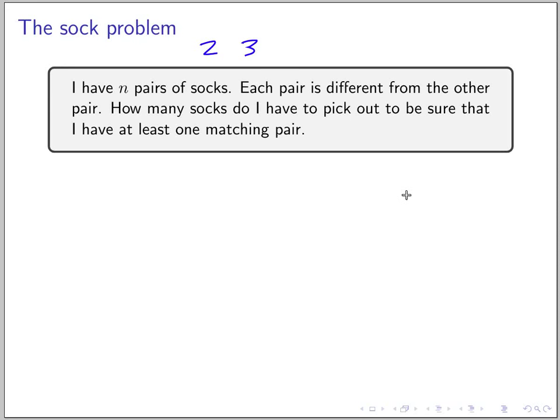Let's think about the worst case. If I have n pairs and if I pick maybe n socks, it can happen that I get a sock from the first pair and the second pair and so on up to the nth pair. So in the worst case, if I pick n socks, it's not enough.